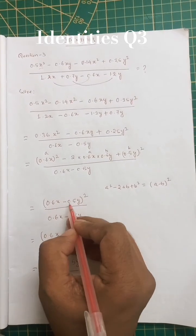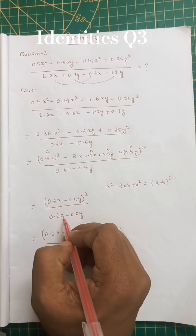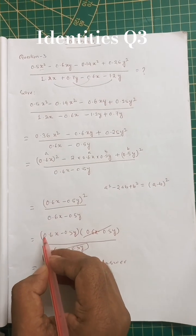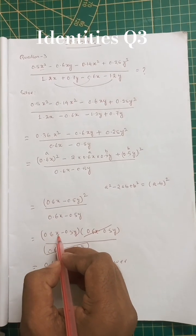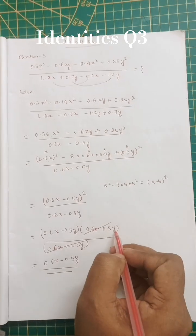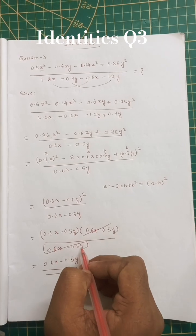We can write 0.6 x minus 0.5 y whole squared divided by 0.6 x minus 0.5 y. To make it easy, that's 0.6 x minus 0.5 y into 0.6 x minus 0.5 y divided by 0.6 x minus 0.5 y.